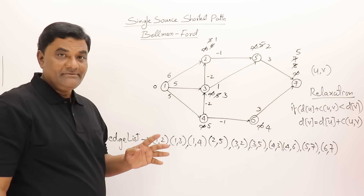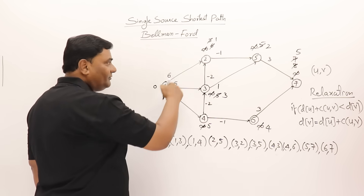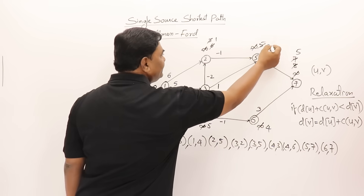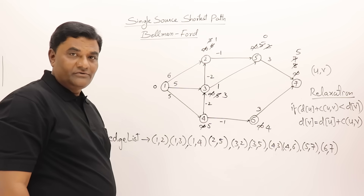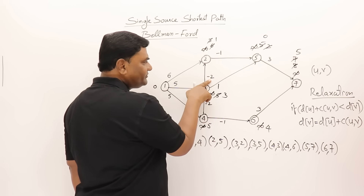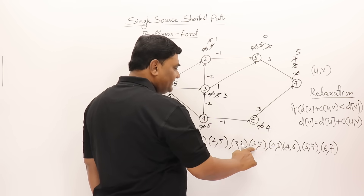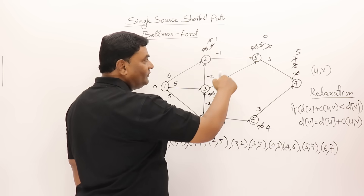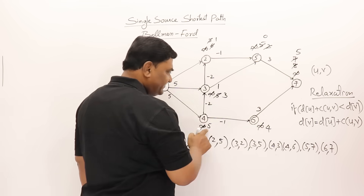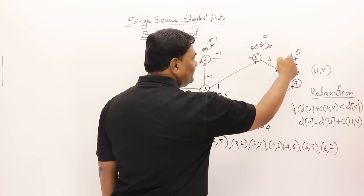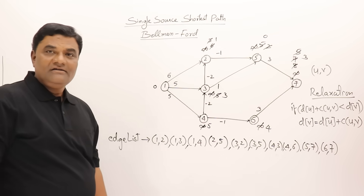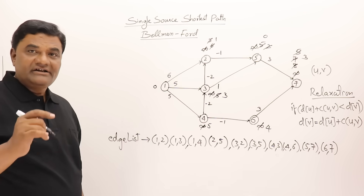Four more passes to go. Third pass: edges (1,2), (1,3), (1,4) — no change. Edge (2,5): one minus one is zero, so vertex 5 changes to zero. Edge (3,2): three minus two is one — already one, no change. Edge (3,5): three plus one is four, but vertex 5 is zero — no change. Edge (4,3): five minus two is three — no change. Edge (4,6): five minus one is four — no change. Edge (5,7): zero plus three is three, so vertex 7 changes to three. Edge (6,7): four plus three is seven, but vertex 7 is three — no change. Three passes completed.